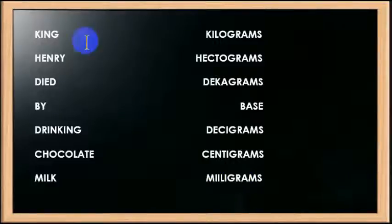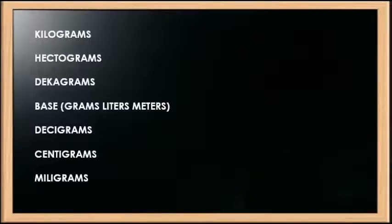And then, so King Henry died by drinking chocolate milk, which will remind you of what the place here. And let's just take a minute to focus on our prefixes. Kilo, hecto, deca, base, deci, centigrams, milligrams. And in this case, like I said, the base is grams, liters, meters.